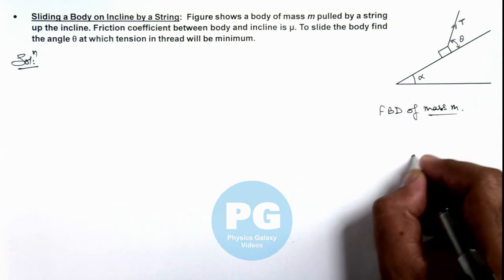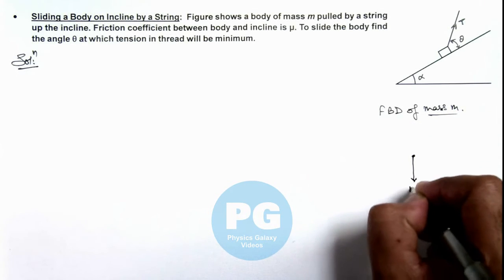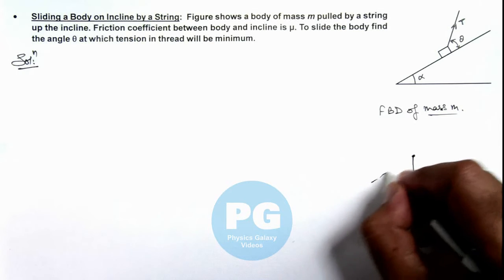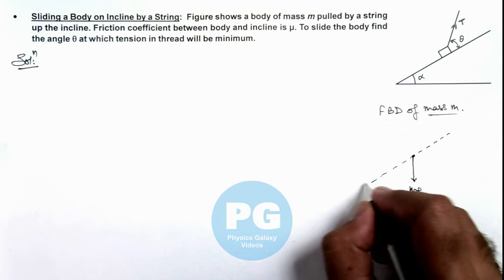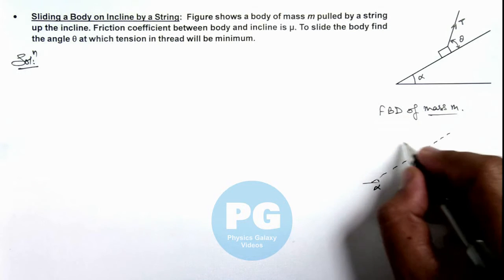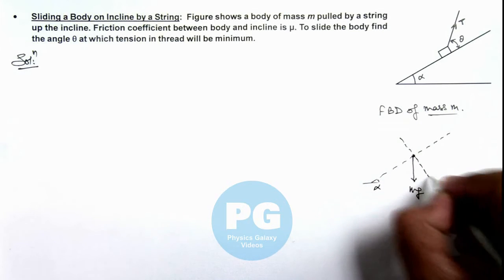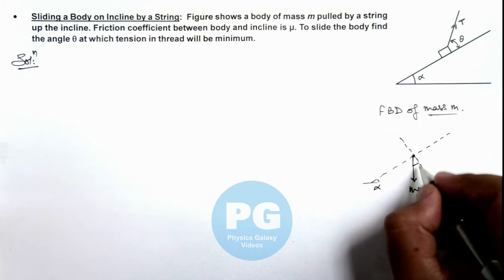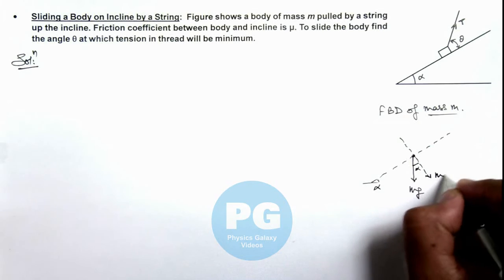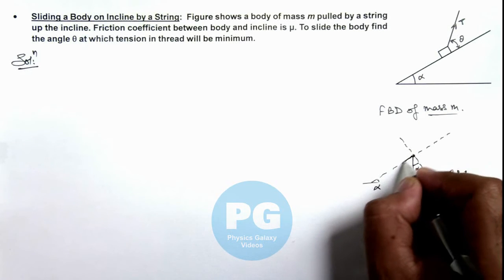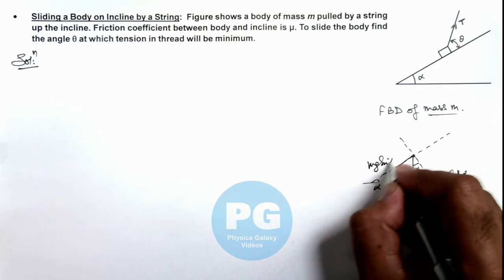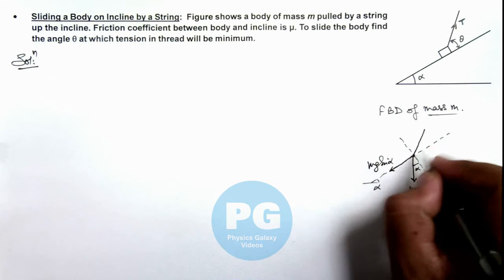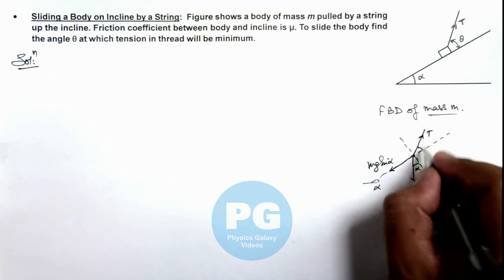You can see the body is experiencing mg in downward direction. If this dotted line is along the length of incline, this angle is α. Here we can see with respect to normal this angle is α, and the component of weight is mg cos α. In this direction the component of weight is mg sin α, and along this direction a tension is acting at an angle θ.